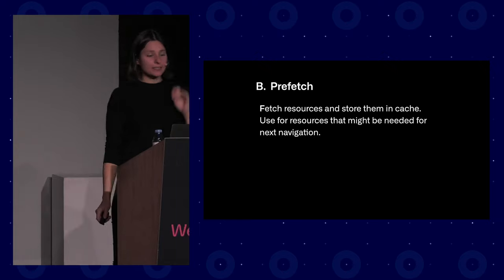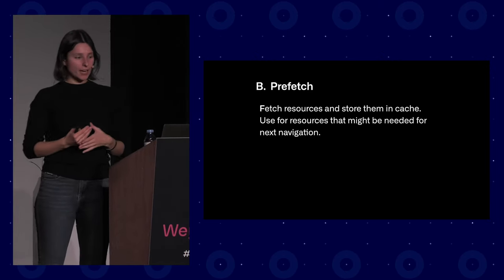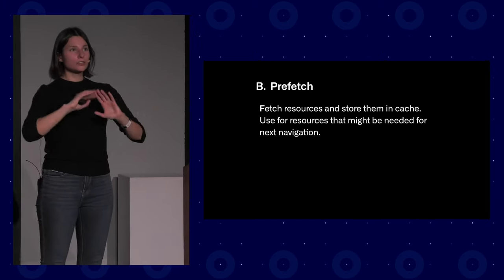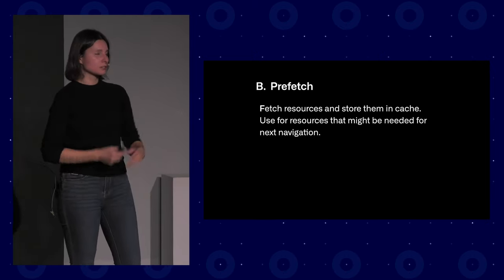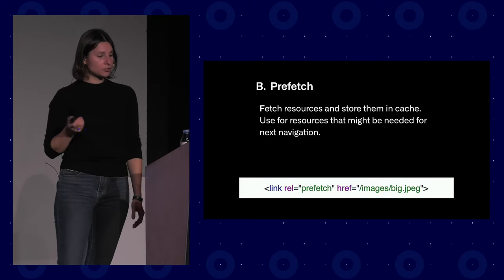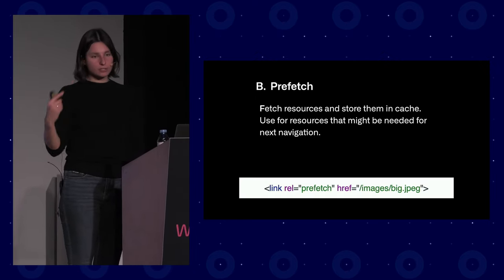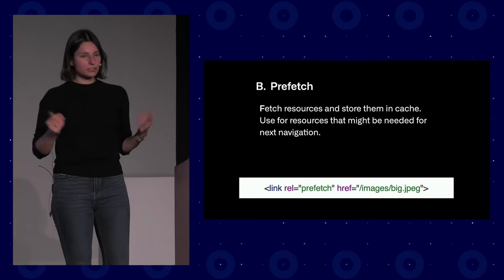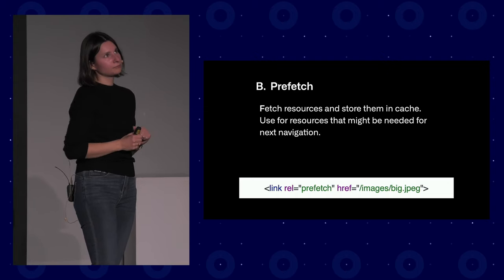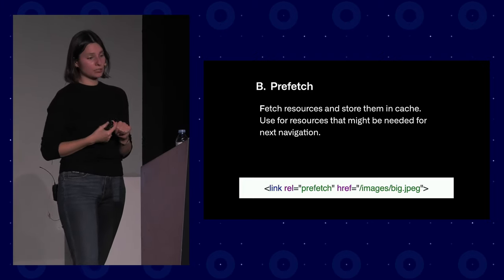The next hint is prefetch, which fetches resources ahead of time and stores them in cache — usually for resources needed on the next navigation. Think of users filling in a form: you know that at the final step, some image or asset will be needed. To add it, set the prefetch flag on the link element. The browser is smarter than us, so this is just a hint — the browser will decide what to do — but it's at least hinted that caching this resource may be needed. Note that caching is restricted by storage limits and how long the resource can be cached.